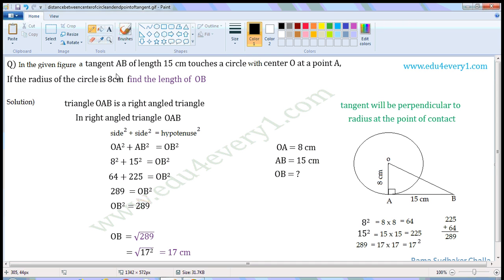In the given figure, a tangent AB of length 15 cm touches a circle with center O at point A. If the radius of the circle is 8 cm, find the length of OB.